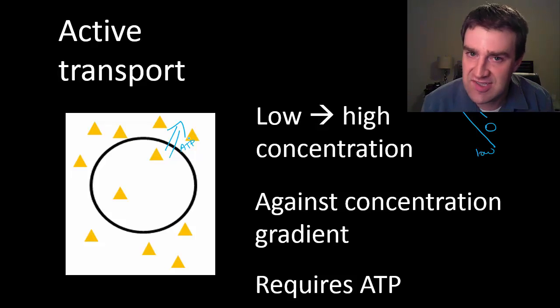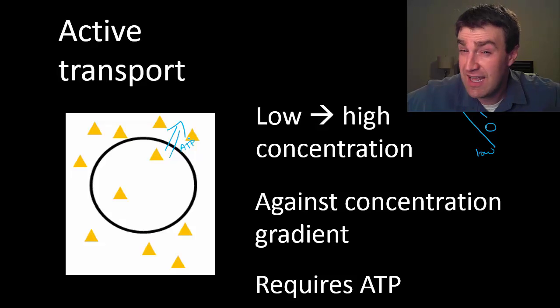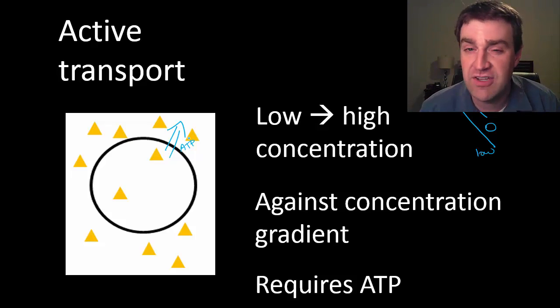For example, plant cells in the roots want to bring in as many of the soil minerals as possible, so they often use active transport to do so.